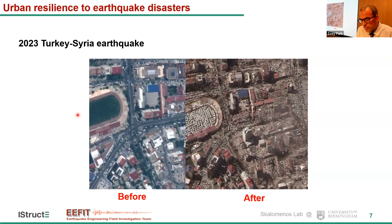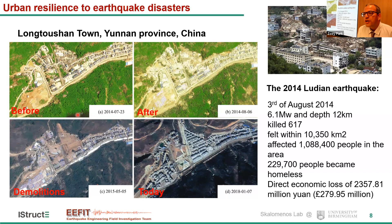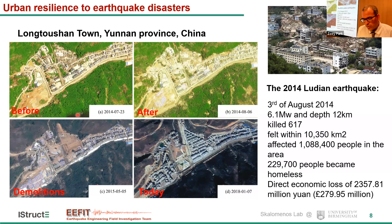Before I introduce the platform and the results for Thessaloniki, I would like to highlight the importance through an example: the Longhuzhan town in China, which suffered from the 2014 Ludian earthquake. We were able to develop the resilience curve based on real data provided by the government. The event hit the region on the 3rd of August 2014, affected more than 1 million people, and direct economic losses were nearly 280 million pounds. This shows the city from satellite view before the earthquake, after the earthquake with demolitions, and what the city looks like today.